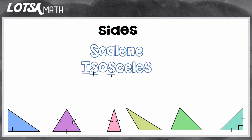Another type of triangle is called an isosceles triangle. An isosceles triangle has two sides that are exactly the same length. I can remember it by looking at the word isosceles — it has these two S's, which reminds me of 'same, same.'